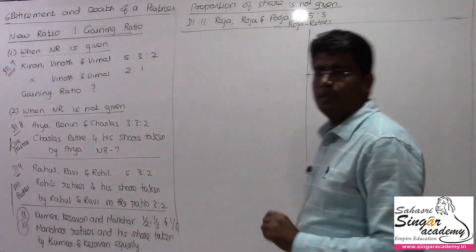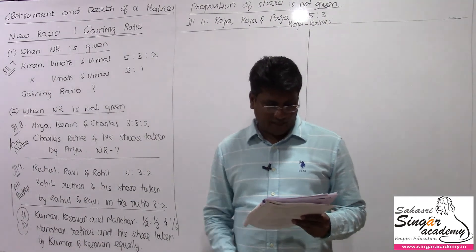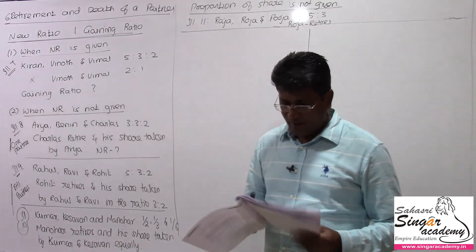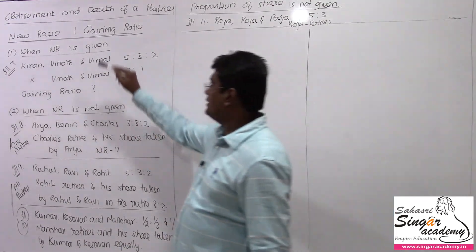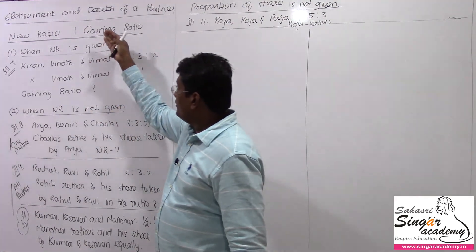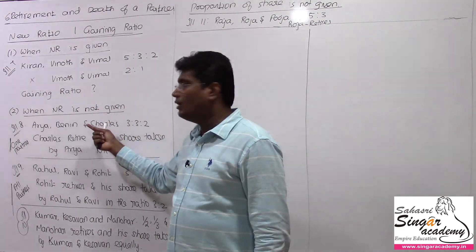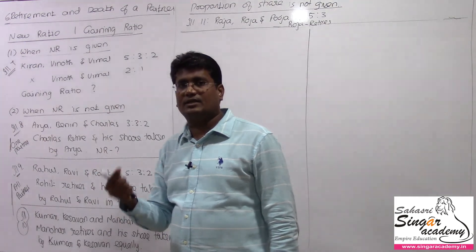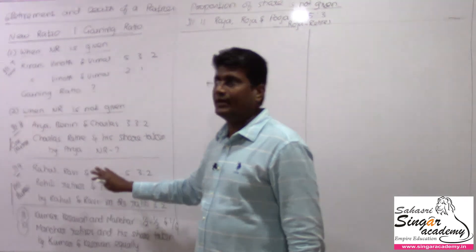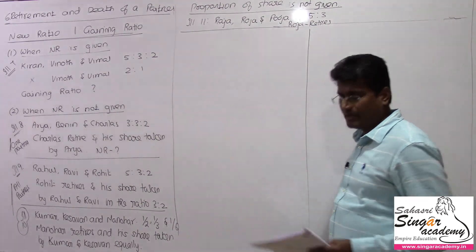In this class, we are going to calculate the new ratio and the gaining ratio at the time of retirement. First part: when new ratio is not given. Second part: when new ratio is given. We also look at how the old partners gain from the retiring partner — the proportion of gain. If such proportion is missing, then the last model. So, we have three models. Let's see one by one.